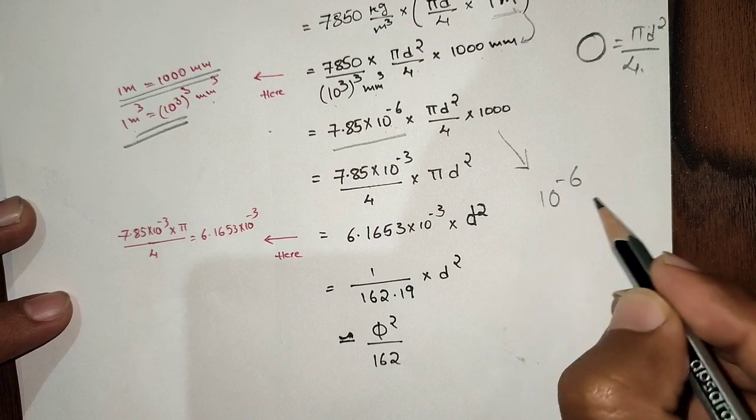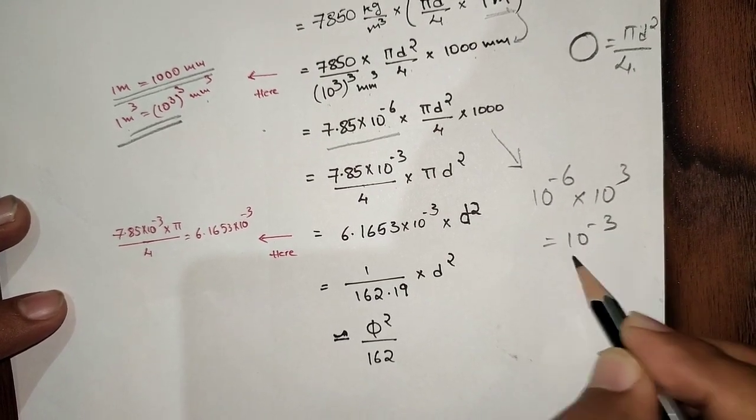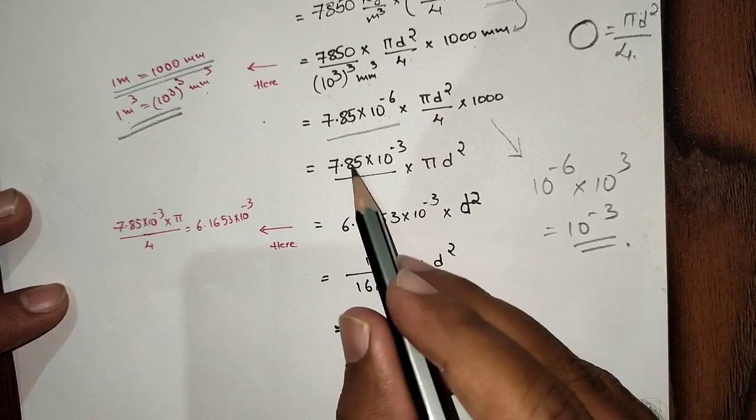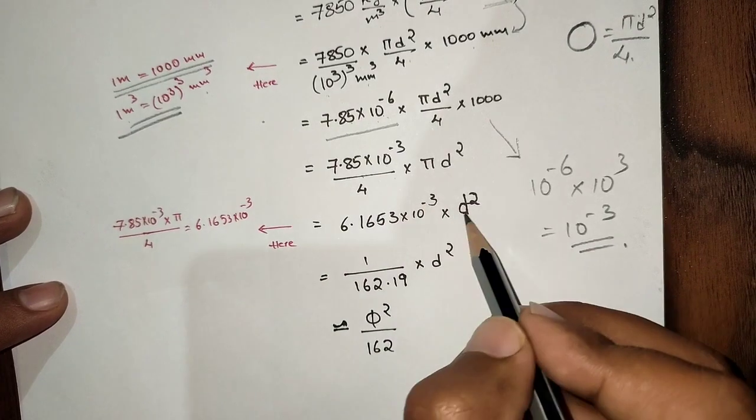10⁻⁶ into 10³, that equals 10⁻³. So now keep 10⁻³ as it is and calculate rest of the value. Will get 6.1653 × 10⁻³.